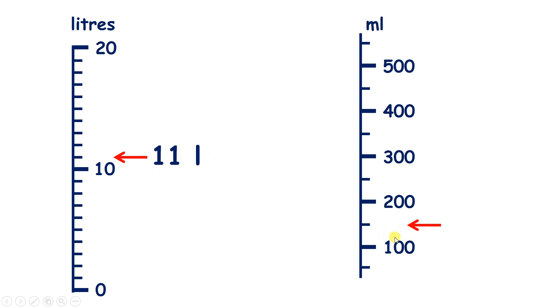Now this is more difficult. Our arrow is pointing right in the middle of 100 and 200 millilitres. So which number is right in the middle of 100 and 200? Well, if we know that half of 100 is 50, because 50 plus 50 is 100, then the number halfway between 100 and 200 must be 150. So we have 150 millilitres.